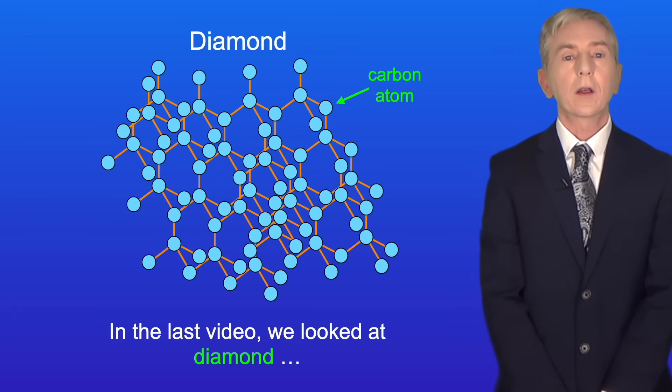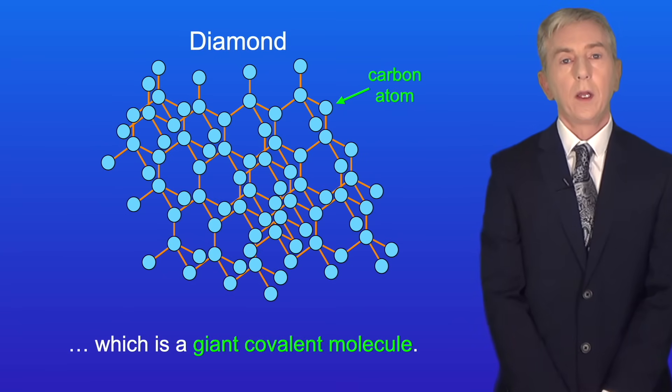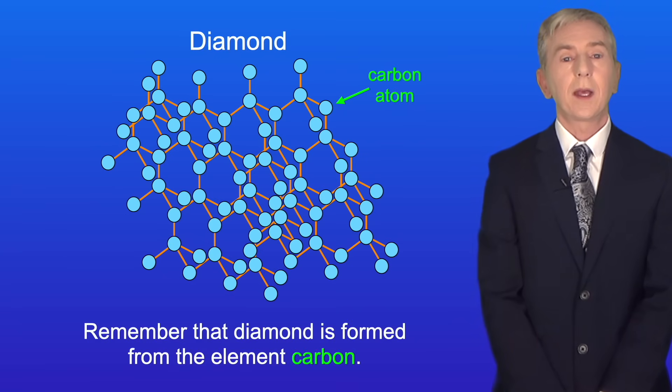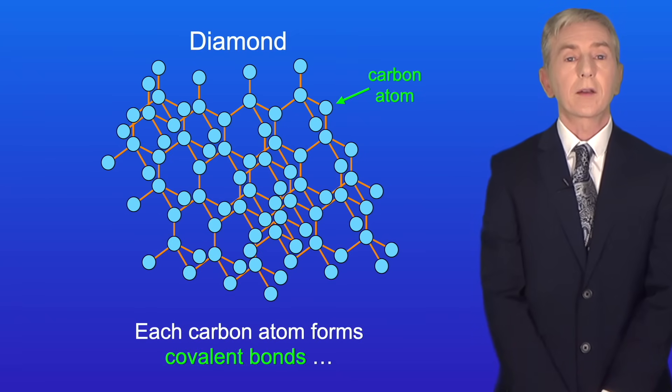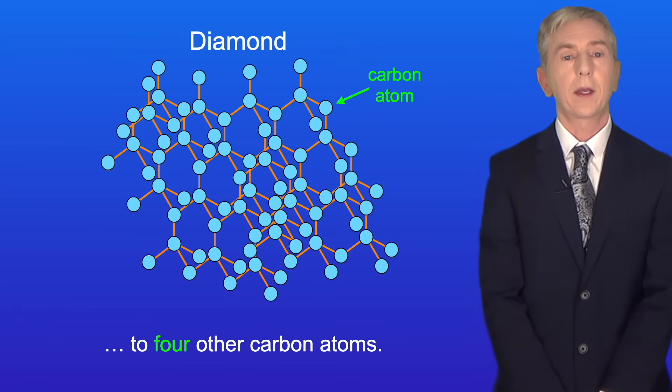In the last video we looked at diamond which is a giant covalent molecule. Remember that diamond is formed from the element carbon and each carbon atom forms covalent bonds to four other carbon atoms.